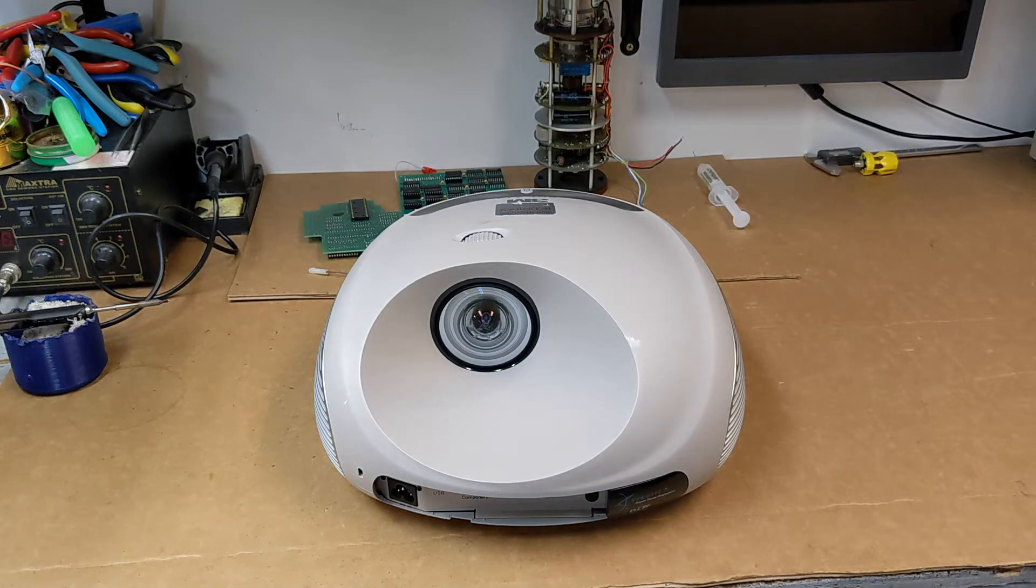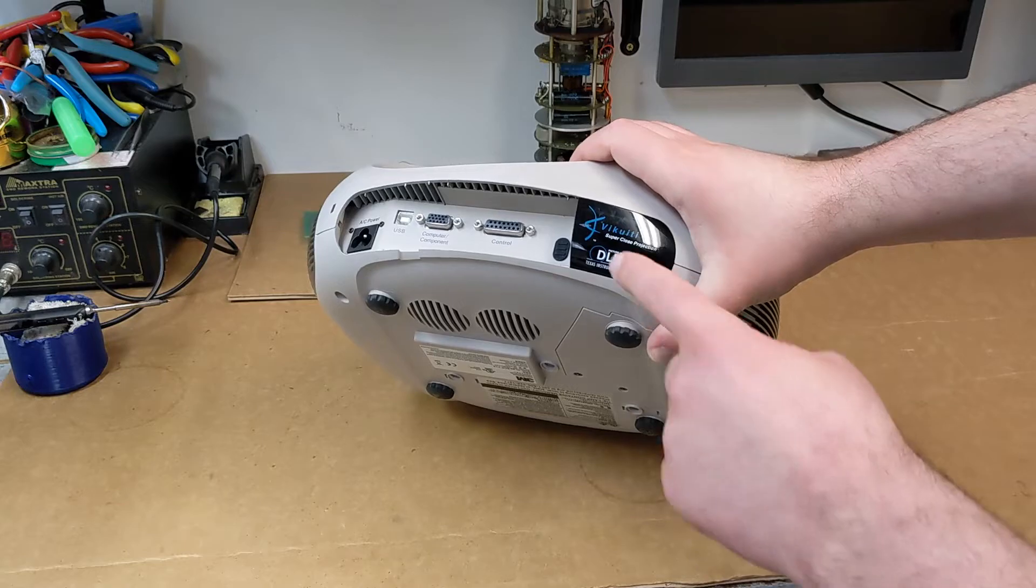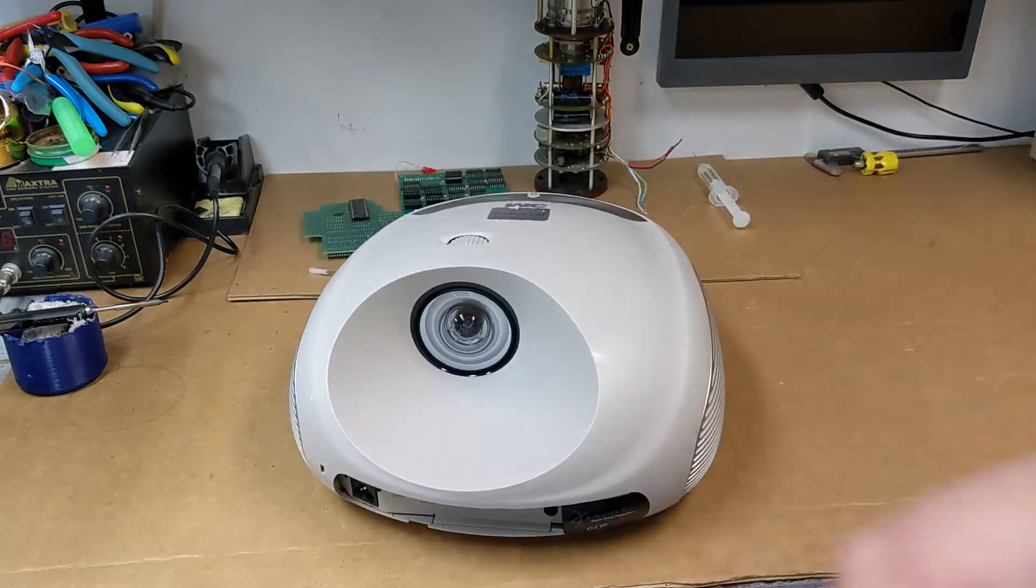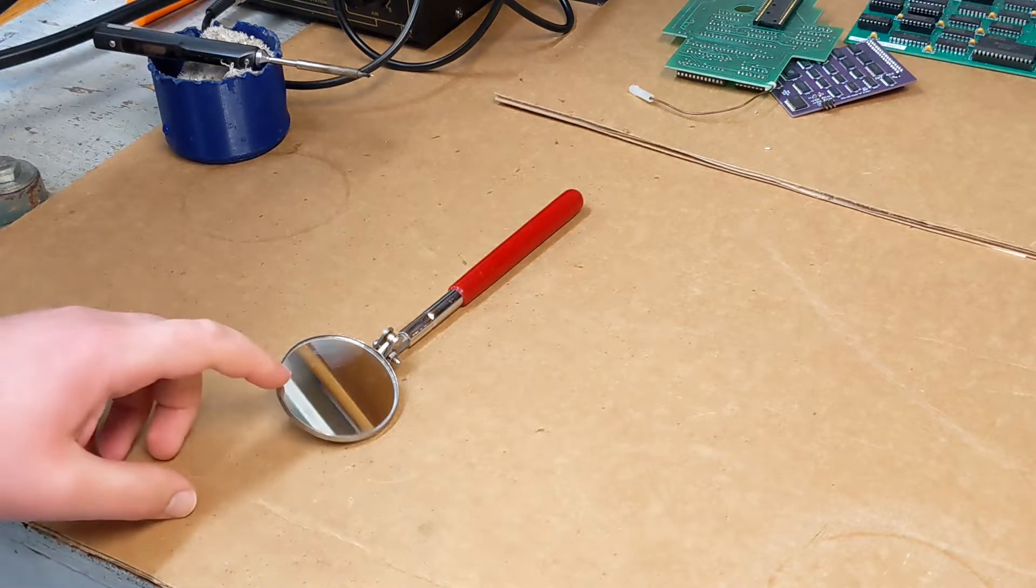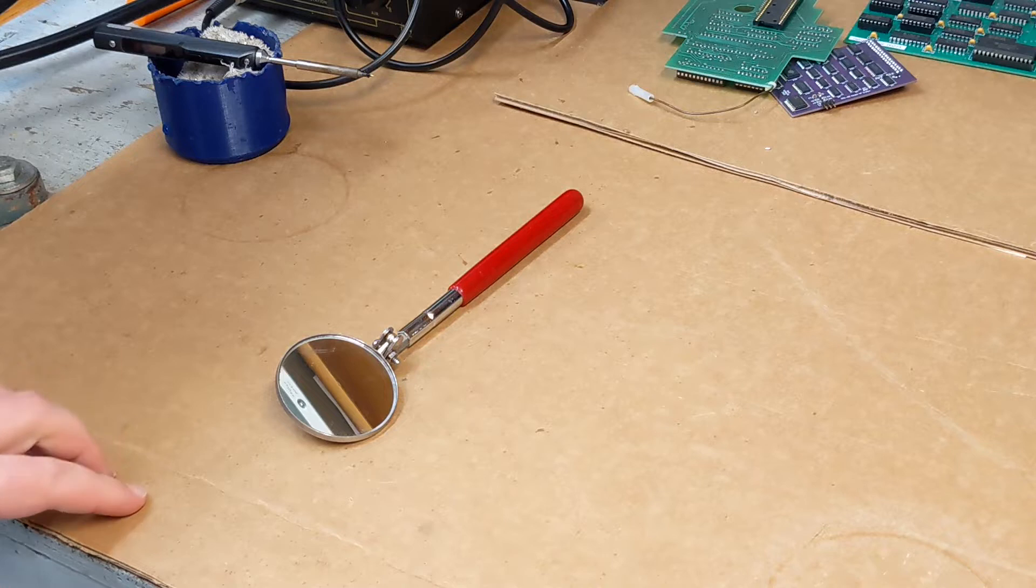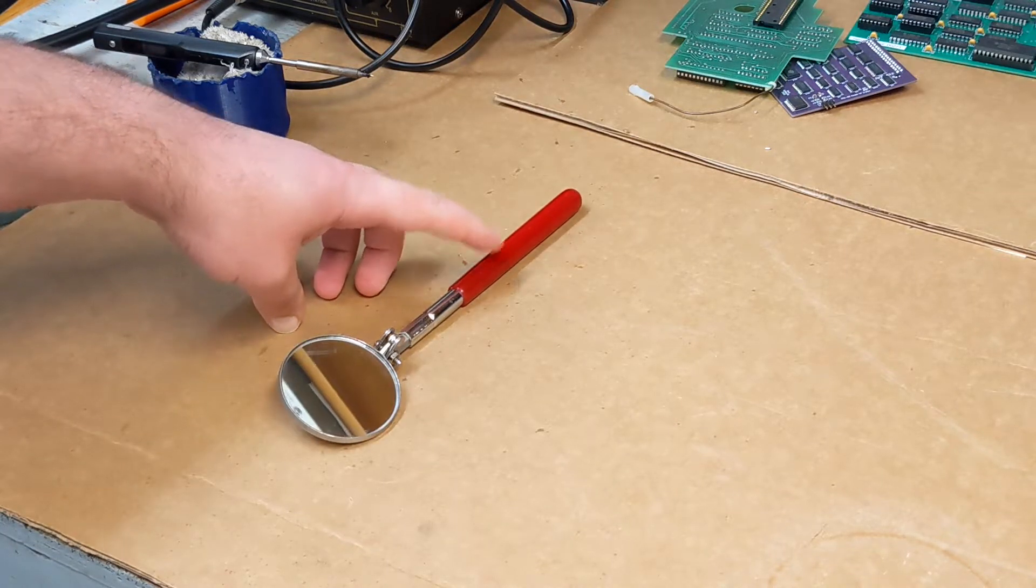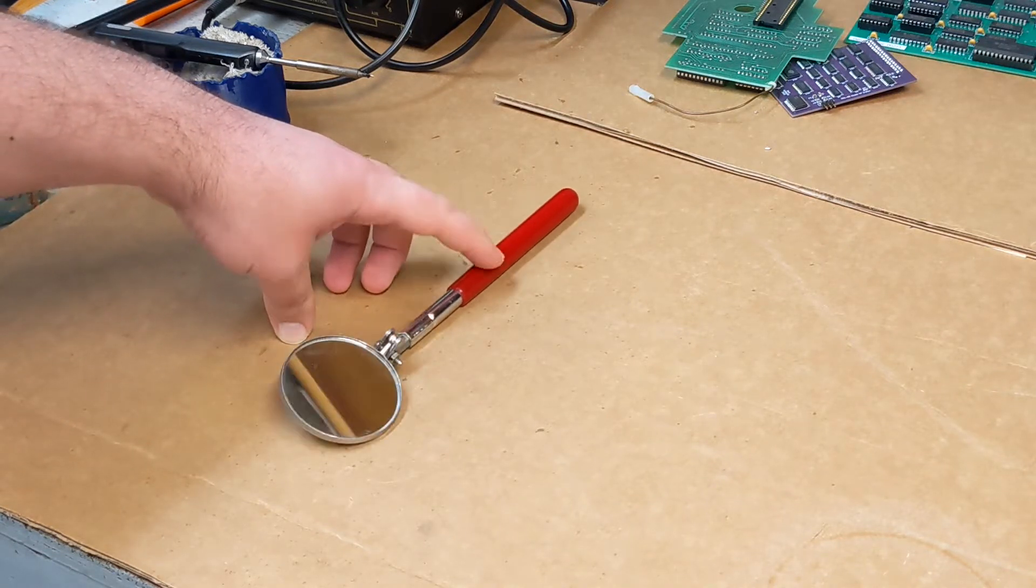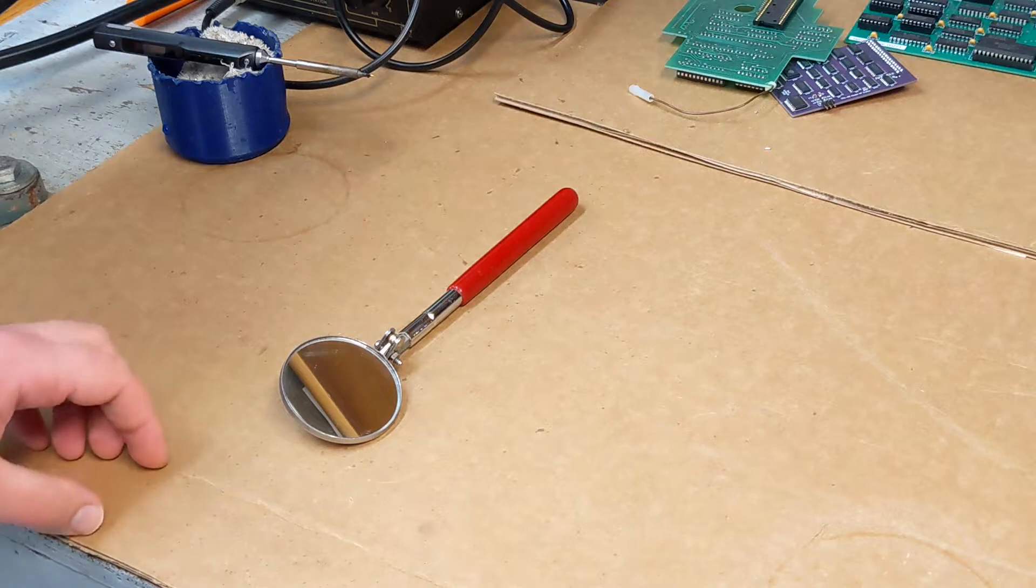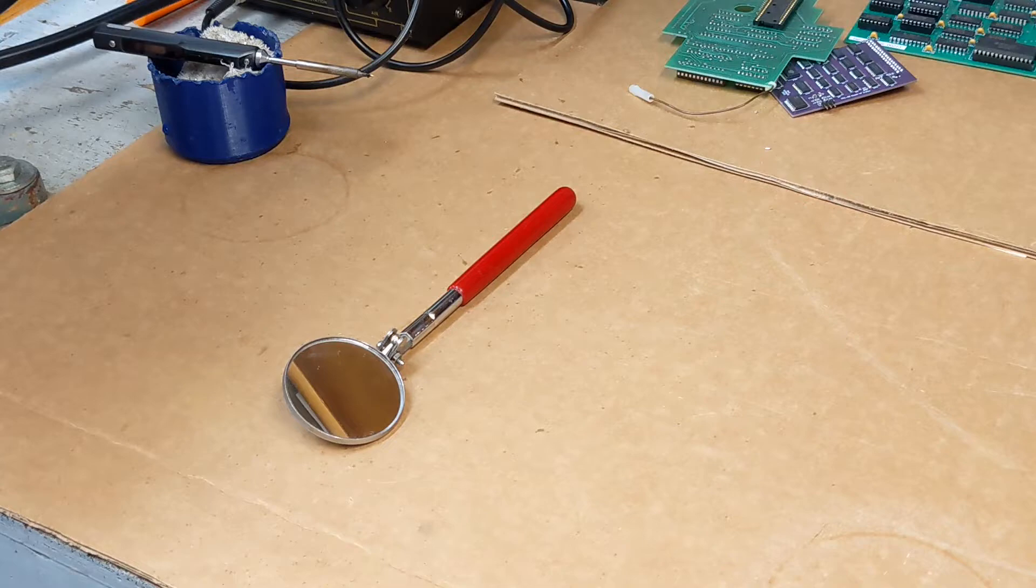Last time was a camera, this time is a projector. Specifically, this is an old DLP projector. In case you forgot how a DLP projector works, the principle of operation is actually remarkably simple. The mirrors are microscopic, but they are real mirrors and they flip back and forth like this, controlled electrostatically. There's really only two positions, and they're usually mounted on a spring instead of some kind of bearing so they don't break off.